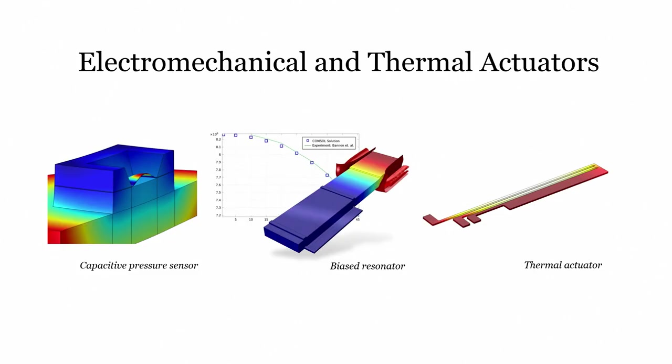Then we have electromechanical and thermal actuators. One example is the capacitive pressure sensor, which is a very well-known sensor mainly used in mobile phones as a touchscreen device.